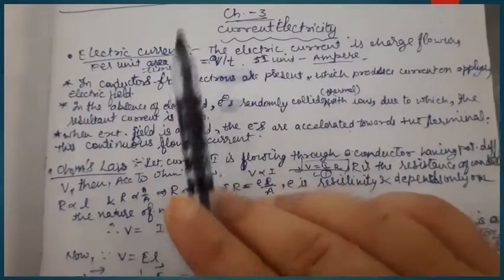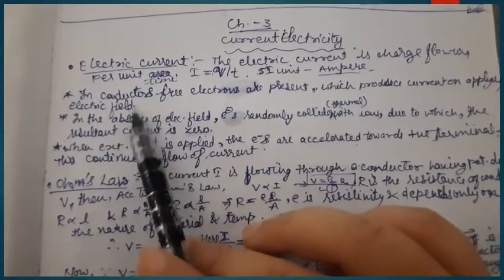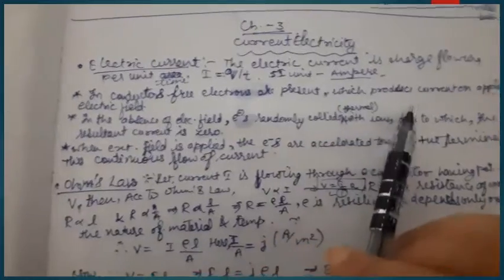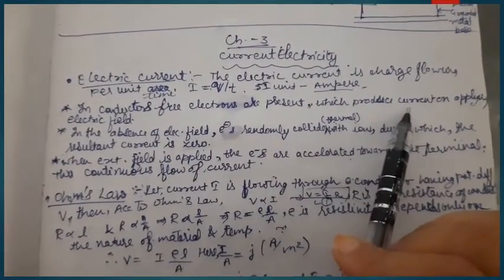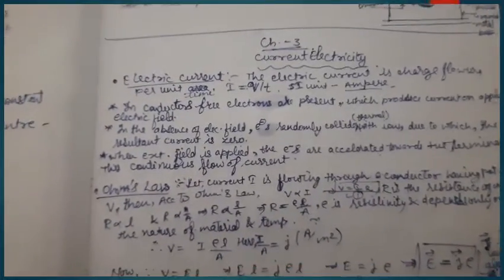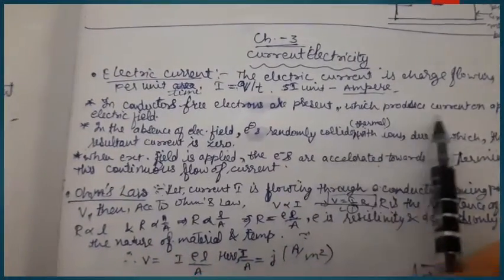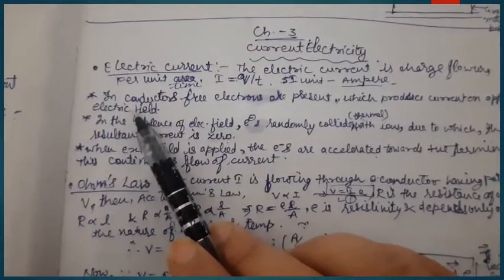The reason for good conduction is the presence of free electrons in conductors. These free electrons produce current when we apply an external electric field. When you connect a conductor to a battery or source, current starts to flow—that is an external electric field being applied.